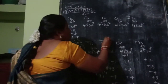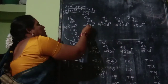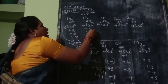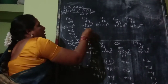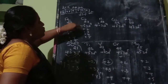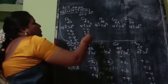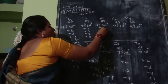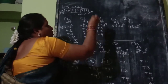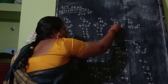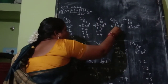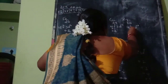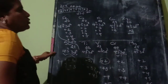Cobalt shows oxidation states: +2, +3, +4, +5. Nickel shows: +2, +3, +4. Copper shows: +1, +2. Zinc shows only +2.